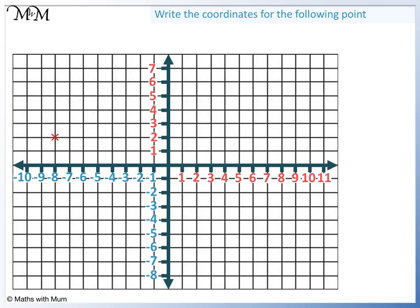Once again we start by reading across. This time we get to -8. Then we read up and we get to 2. So the coordinates are (-8, 2).